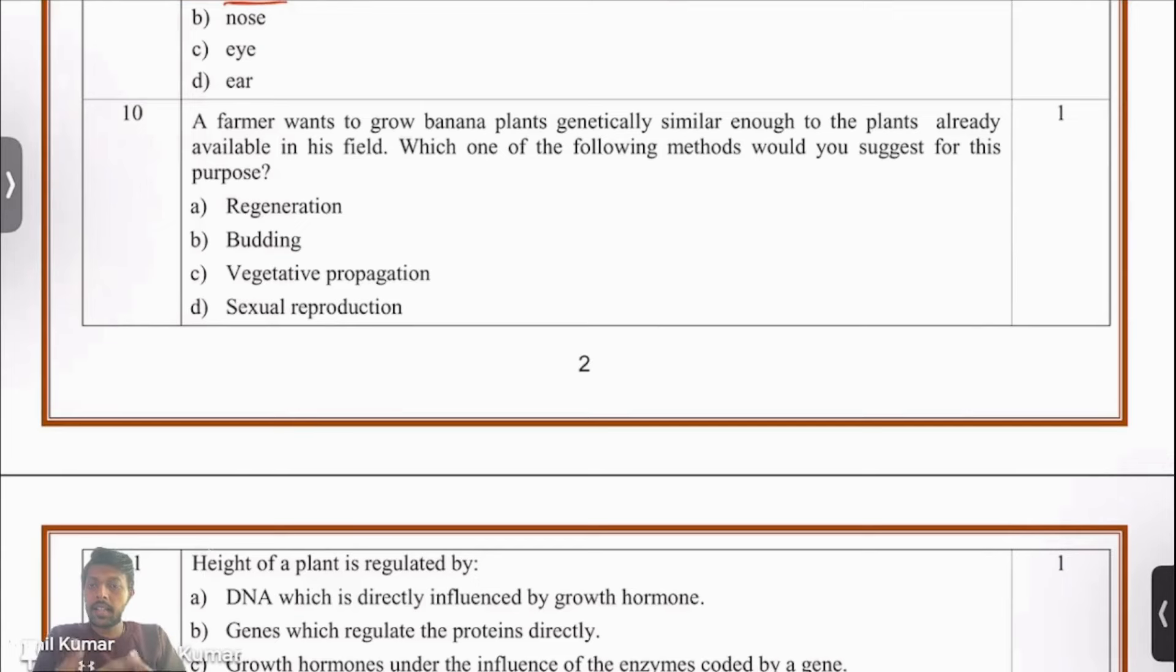Question 10. A farmer wants to grow banana plants genetically similar enough to the plants that already are there in his field. Which of the following methods would be best? Let's do a quick recap of all the four methods. What is regeneration? We use tissues to grow the plant, going down to the very basics - cells and tissues. The offsprings that emerge from there will not necessarily be genetically similar to the local variety. So regeneration is definitely not a method to produce genetically similar plants.